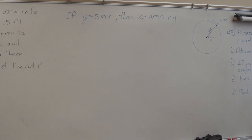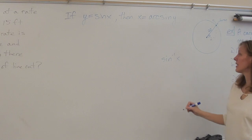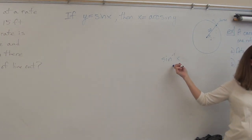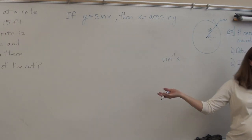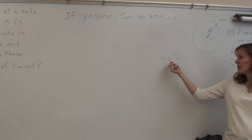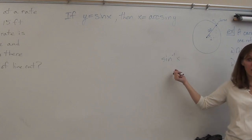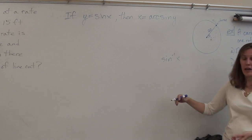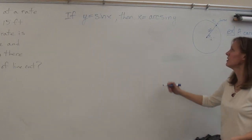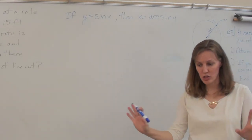That negative-1 exponent I never liked because it can be misinterpreted as a reciprocal. If I write sine to the negative first power of x, does that mean the negative first power — which would be cosecant — or does that mean the inverse, which would be arc sine? It's the same notation for both, so there's ambiguity. That's why I like to use 'arc sine,' because then you just know it's the inverse.